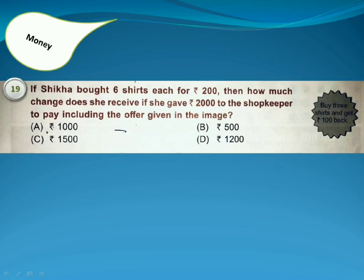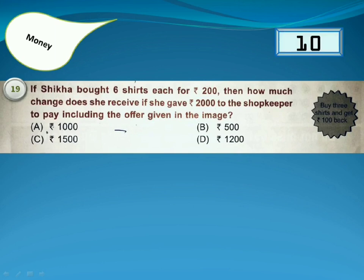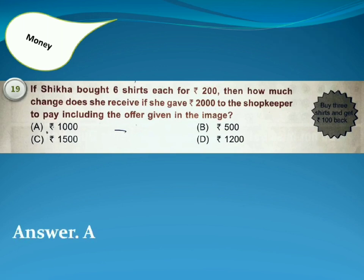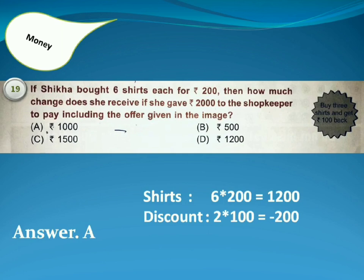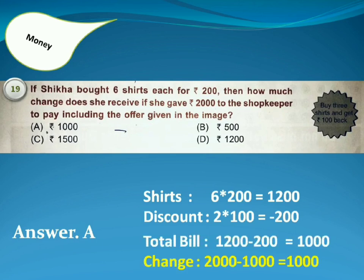If Shikha bought 6 shirts, each for 200 rupees, then how much change does she receive if she gave 2000 rupees to the shopkeeper, including the offer given in the image? Answer is Option A. 6 shirts will cost 1200 rupees, and the offer says buy 3 shirts and get back 100, so she will get a discount of 200 rupees. Total bill will be 1000, and change will be 2000 minus 1000, which equals 1000.